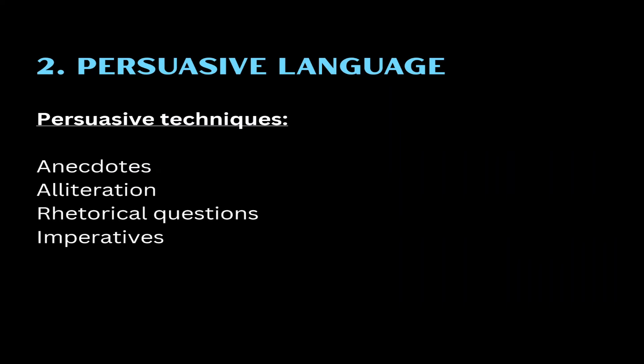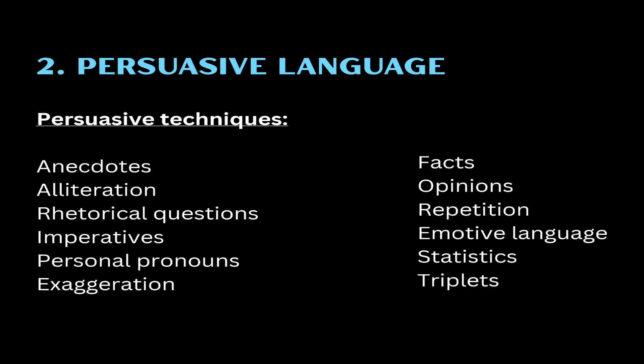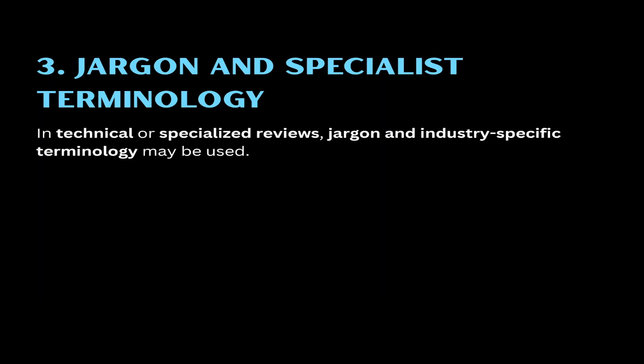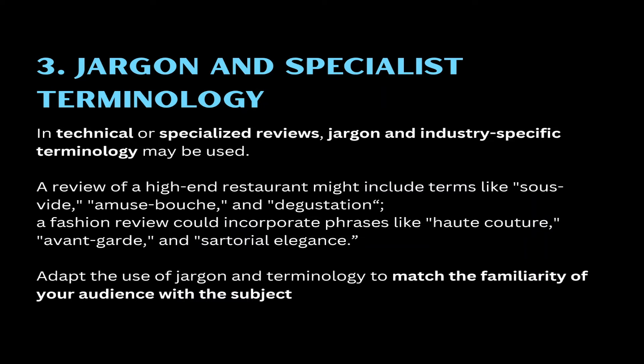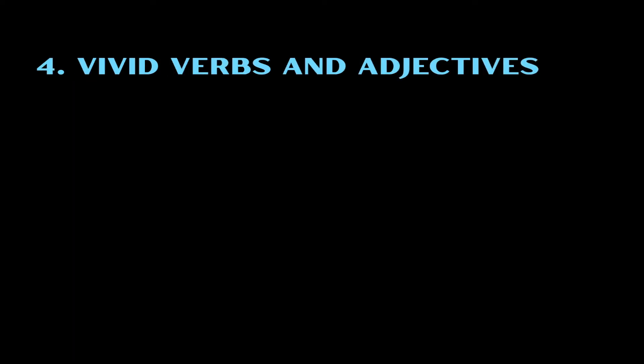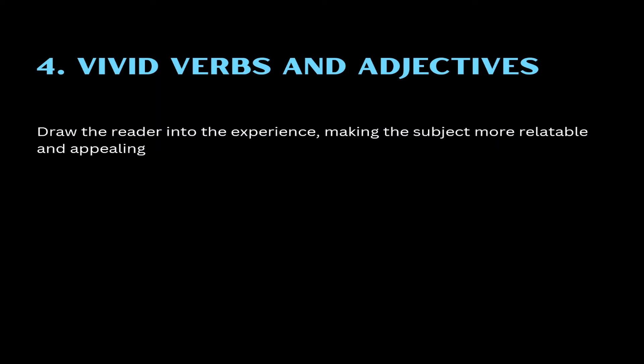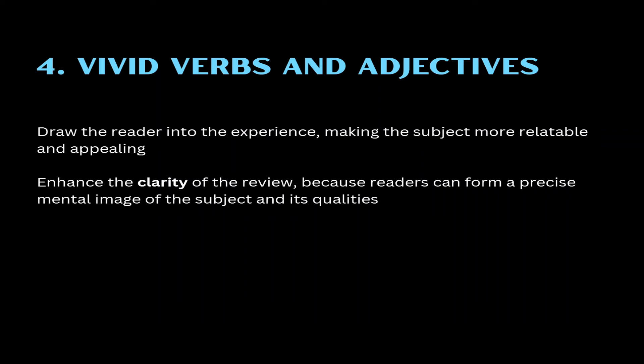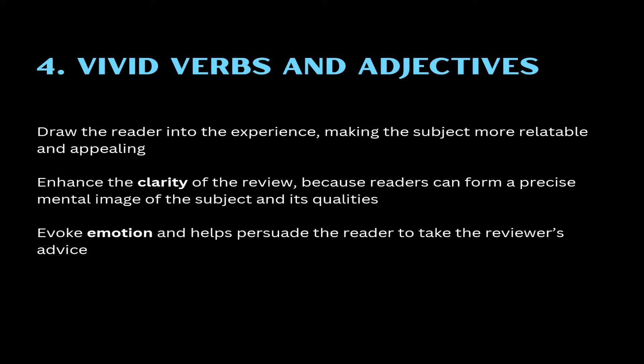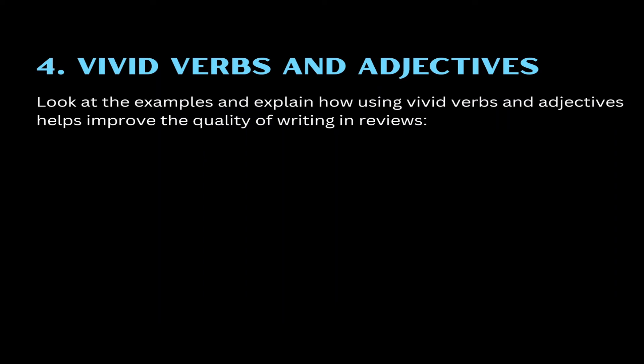In addition to persuasive appeals, you will also need to use a variety of different persuasive techniques. You can find videos about different persuasive techniques on the channel. In technical and specialized reviews, you can use jargon and industry-specific terminology — it's crucial to adapt the use of jargon and terminology to match the familiarity of your audience with the subject. Reviews also use vivid verbs and adjectives to draw the reader into the experience, making the subject more relatable and appealing. Using specific verbs and adjectives enhances the clarity of the review, because readers can form a precise mental image of the subject. Vivid language evokes emotion and helps persuade the reader to take the reviewer's advice.